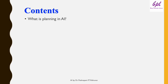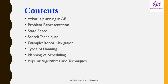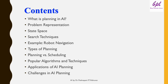These are the contents of the video. We will start with what is planning in AI, then discuss planning problem representation, search space, search techniques, and one example of planning — robot navigation. After that, we will discuss types of planning, the difference between planning and scheduling, popular algorithms and techniques, applications of AI planning, and finally challenges in AI planning.